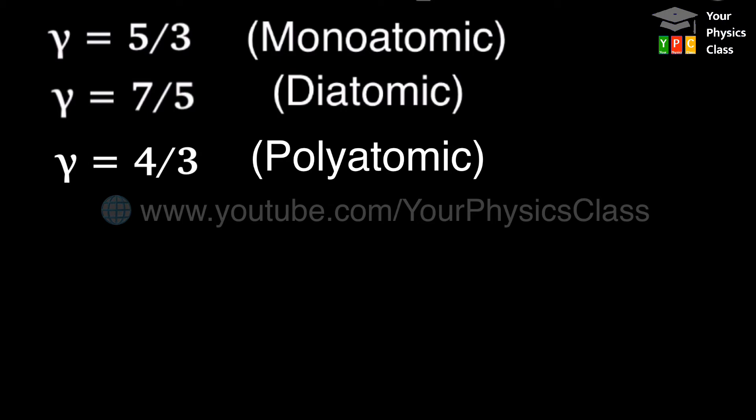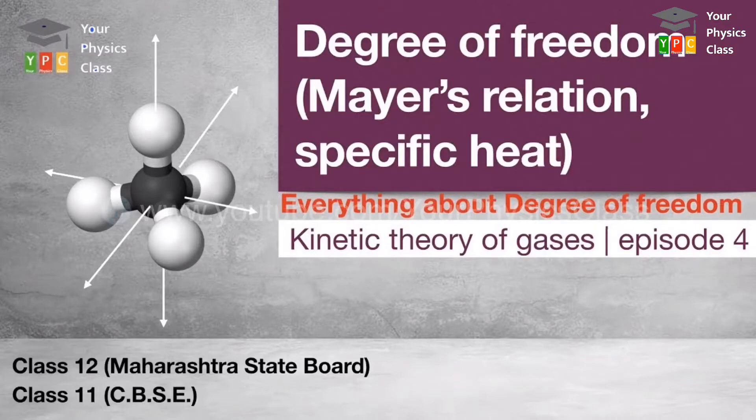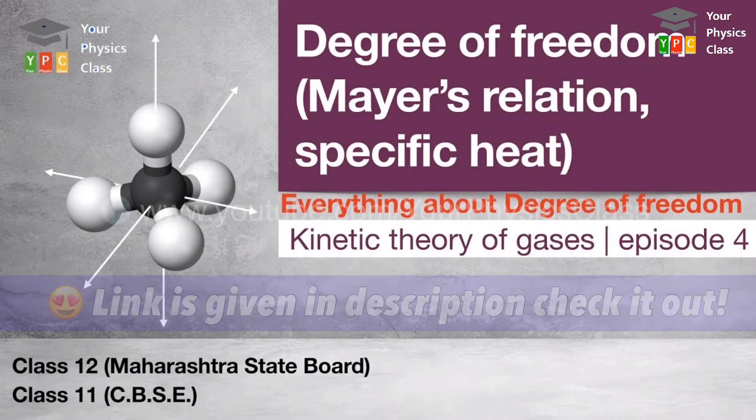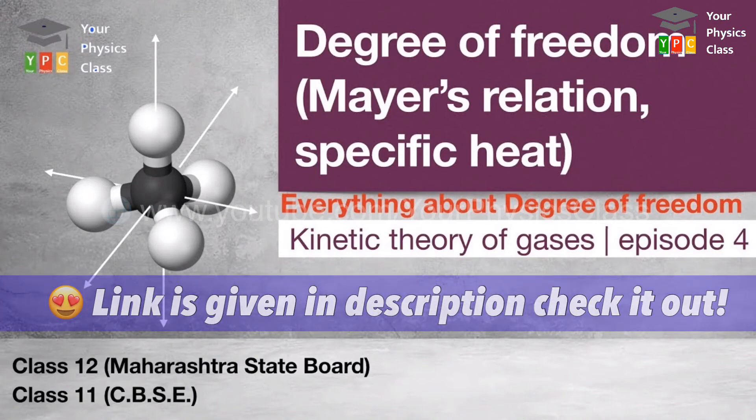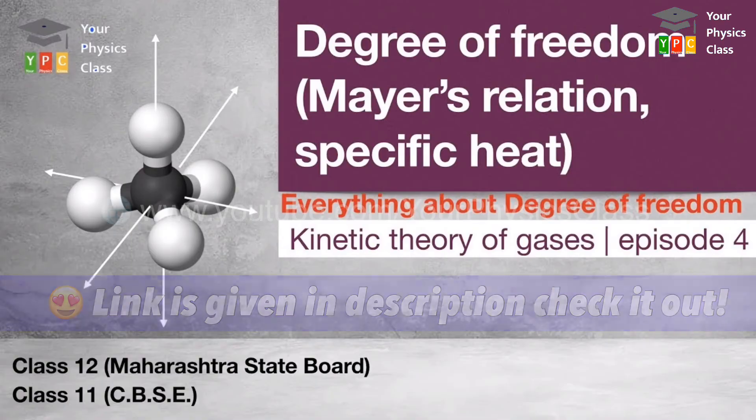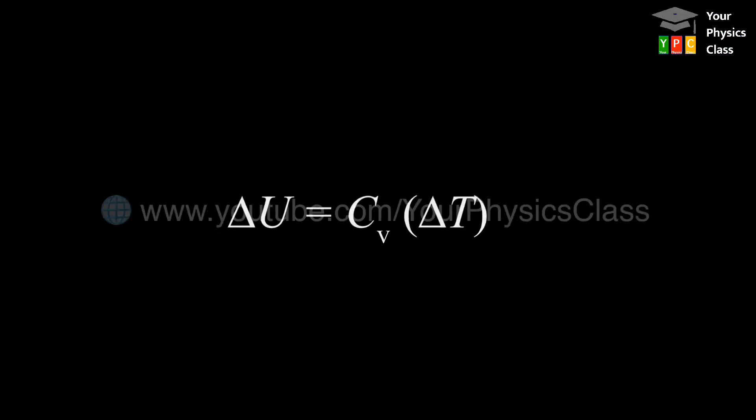Friends, the value of gamma depends on degrees of freedom of the gas that we have seen already in a previous video. If you have not seen that video, I would suggest you go to our channel page, find this video, and see it. The change in internal energy of one mole of gas is given by delta U equals CV times delta T.